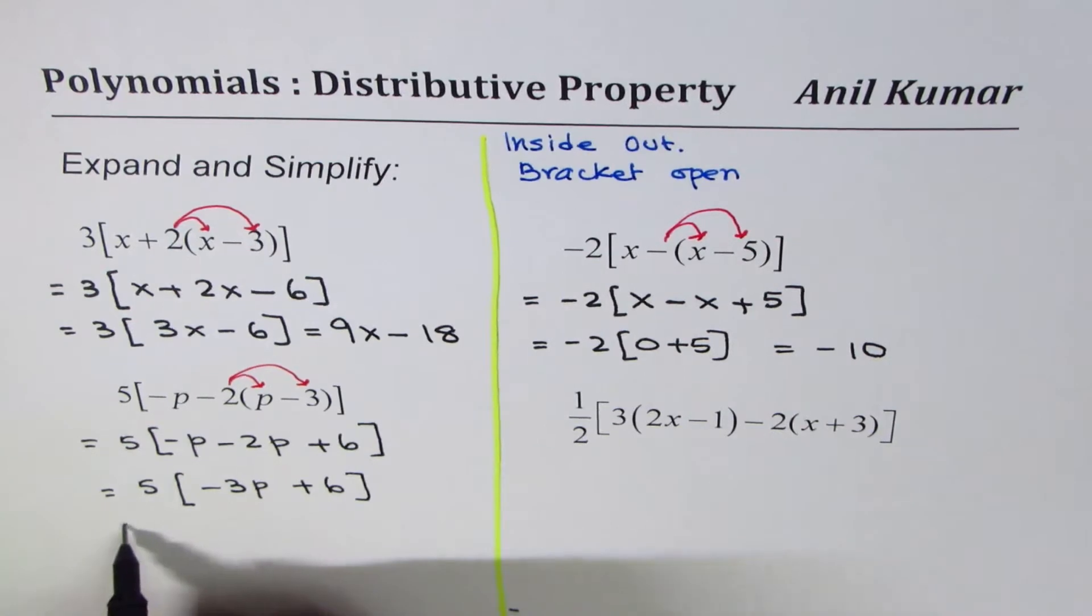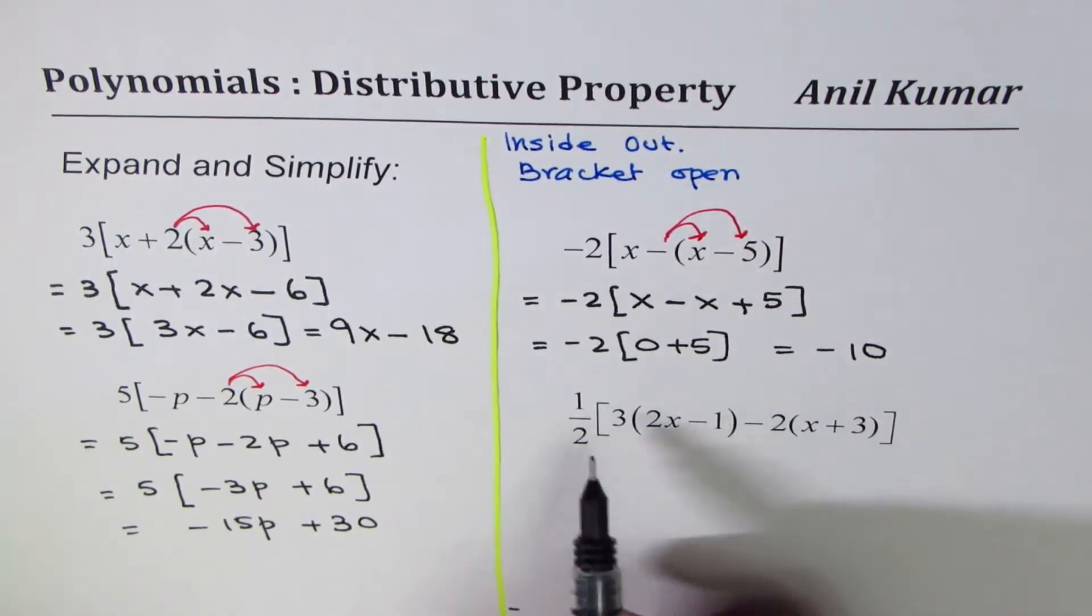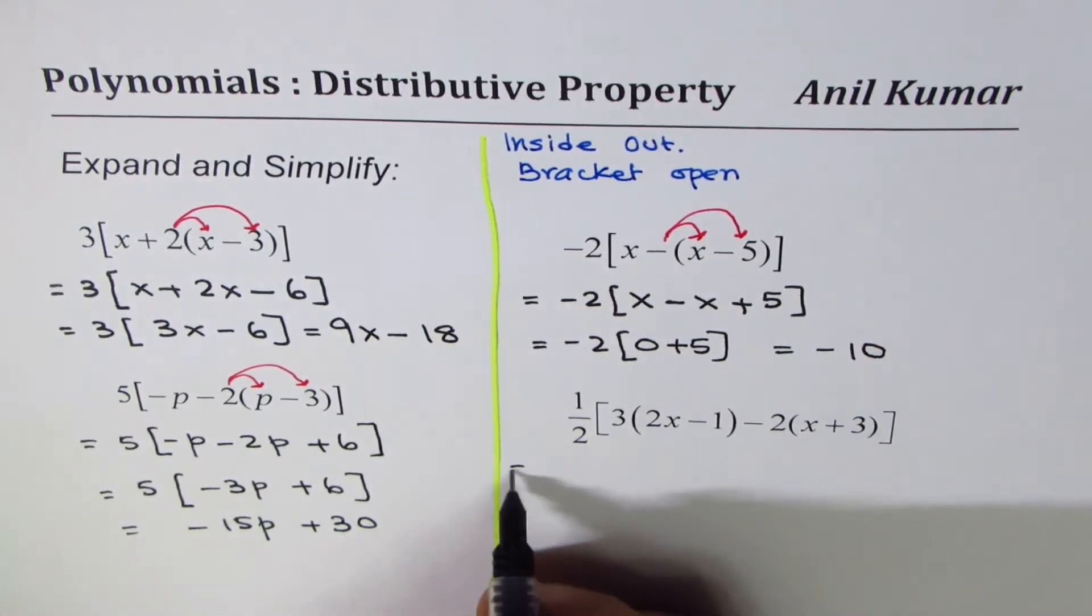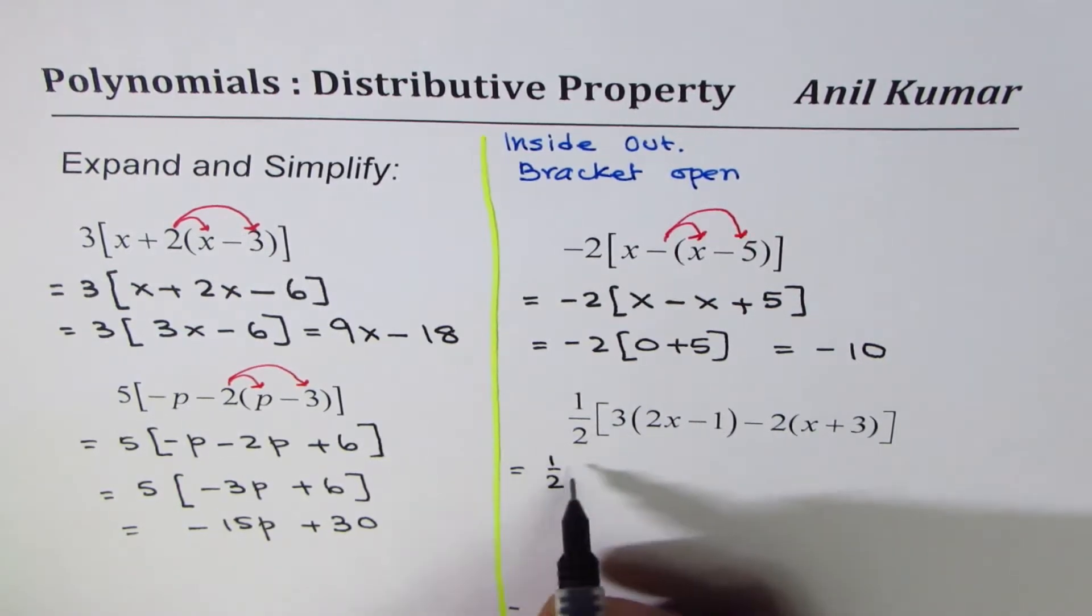Right here we have involved fractions and two brackets inside, but the method is same. So we'll continue writing the outside term as such, open the brackets.